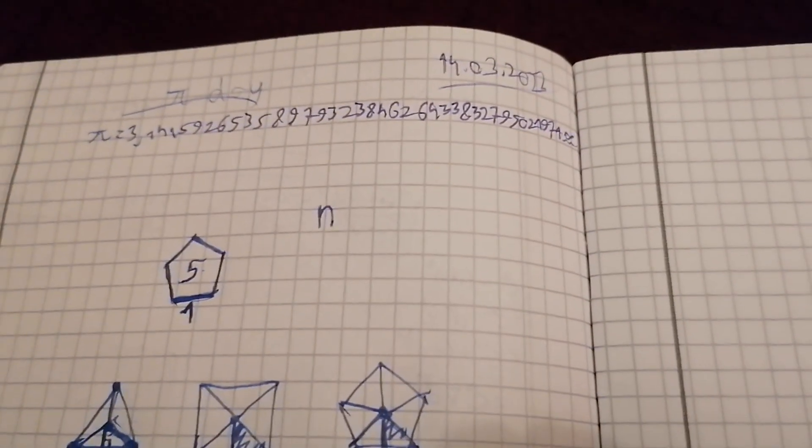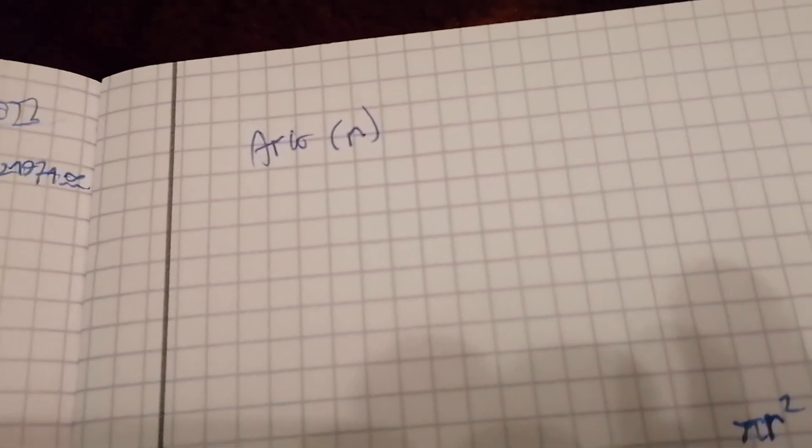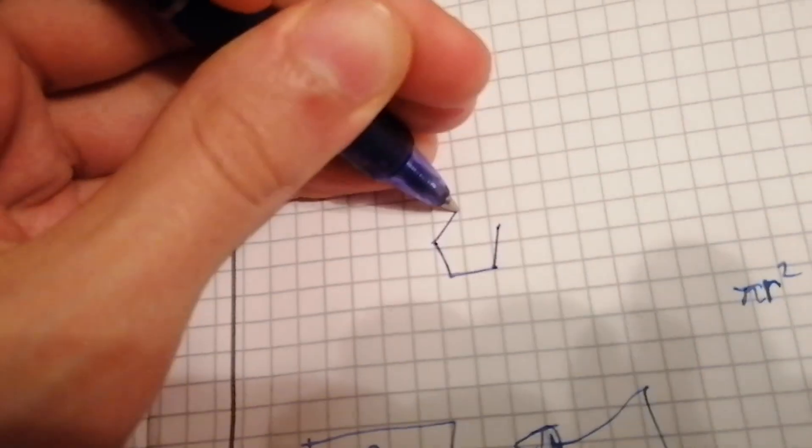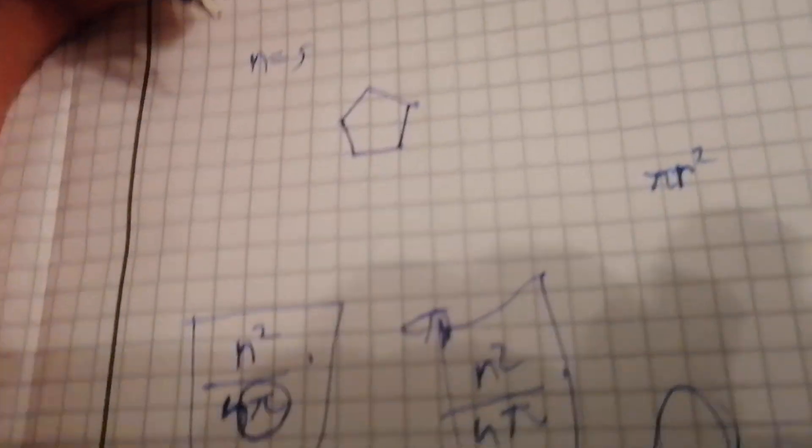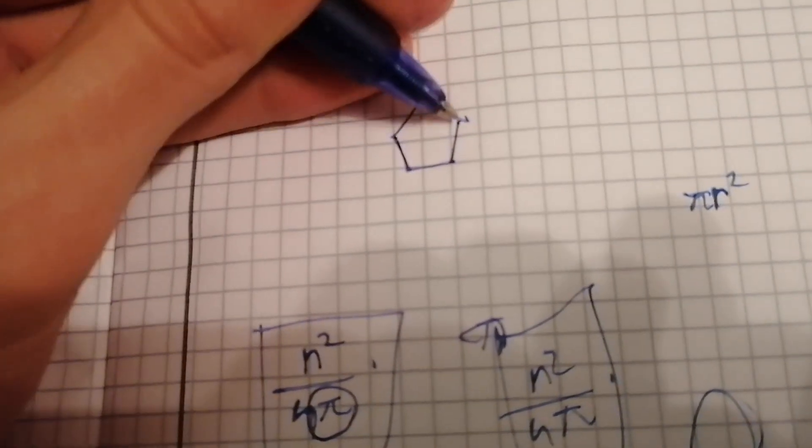We're actually going to investigate a really interesting function. So imagine this, we want a function that tells us the area of a regular polygon with side length 1 that has n sides. So, let's take an example, if our n is equal to 5, it means that we want a regular polygon with 5 sides. Like this, this is a pentagon, regular pentagon. A regular polygon means that all the sides are equal in length and also all the angles are equal in measure.